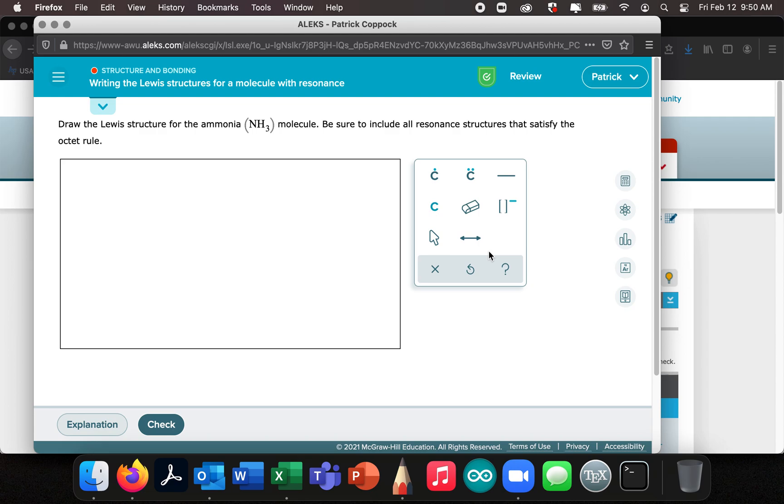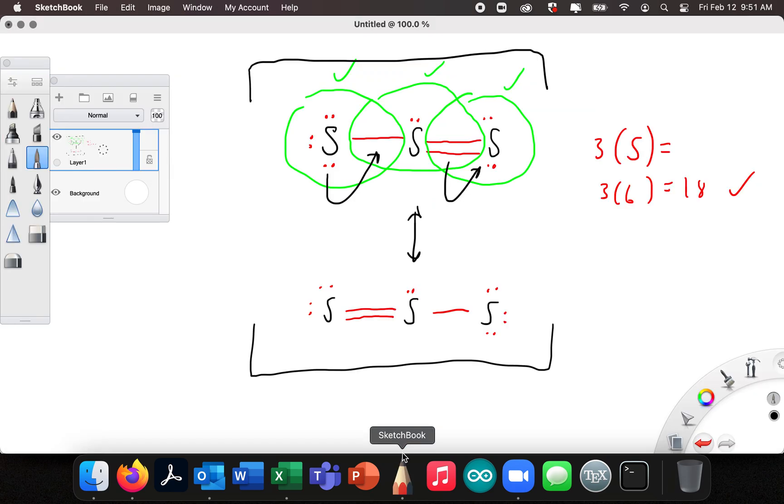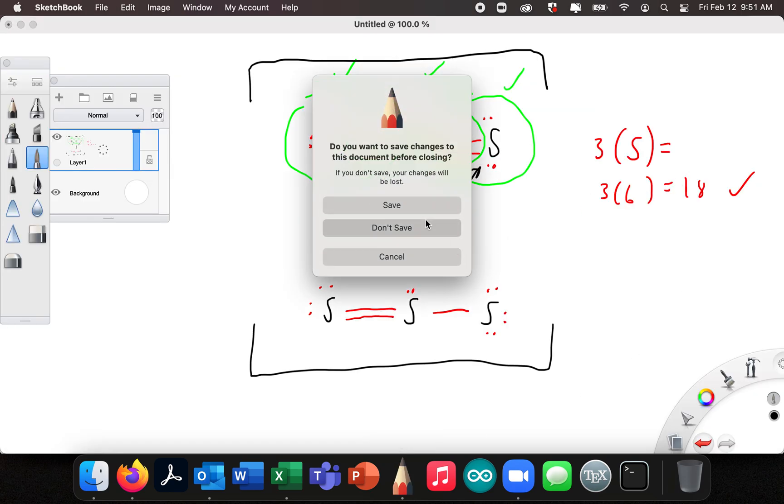Okay, so as promised, I'm going to do a couple more problems on writing the Lewis structure for a molecule with resonance to give you some more examples. Now this is going to go kind of fast because I showed you in a previous video how to do it. Now I'm just going to do it really fast. So ammonia NH3, let's come over here, let's do a new page.